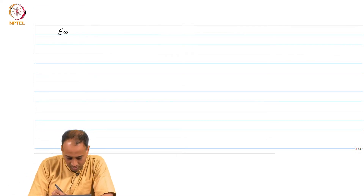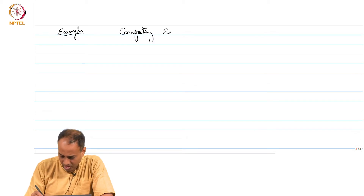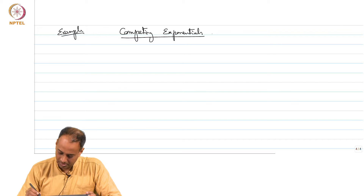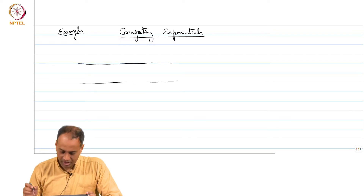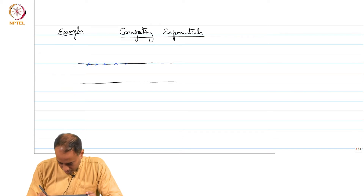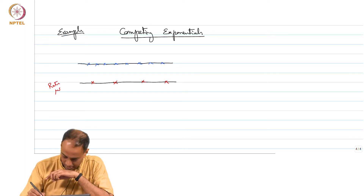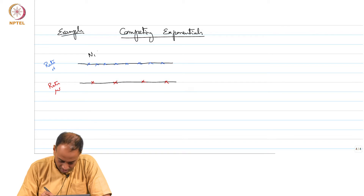Let us do another example. Let us say you have two Poisson processes, one is of rate lambda and another is of rate mu, and they are independent. This guy is N1(t) and this guy is N2(t).